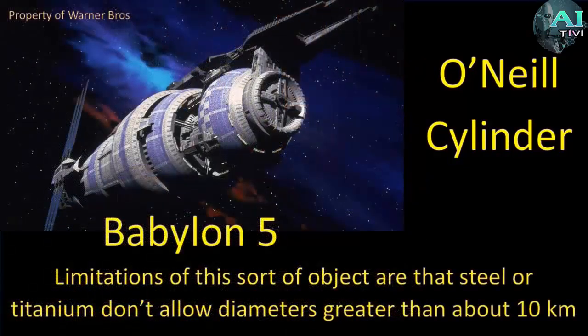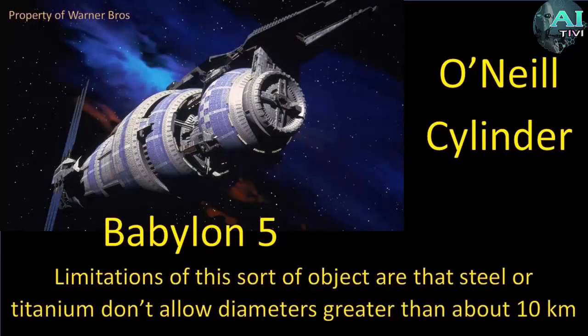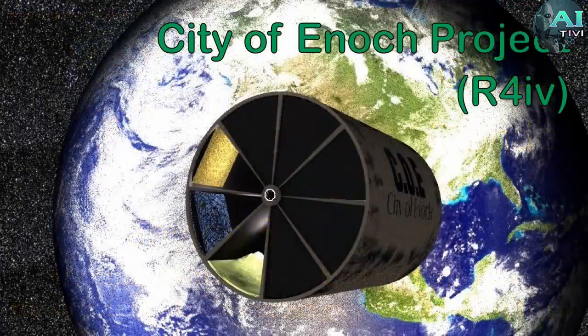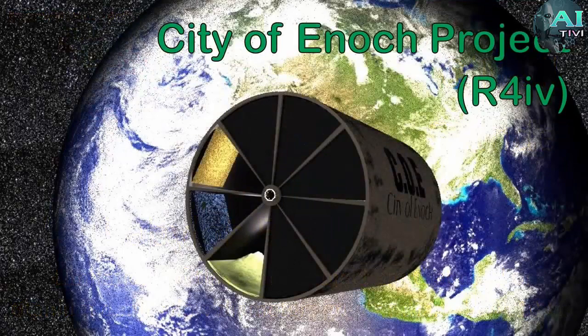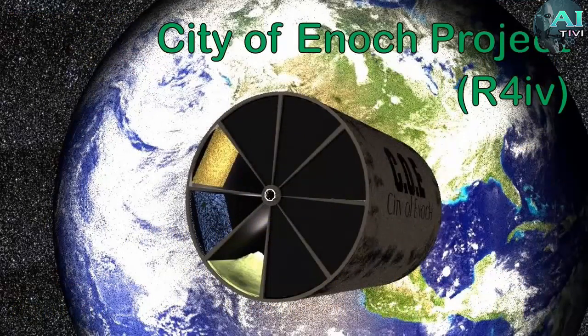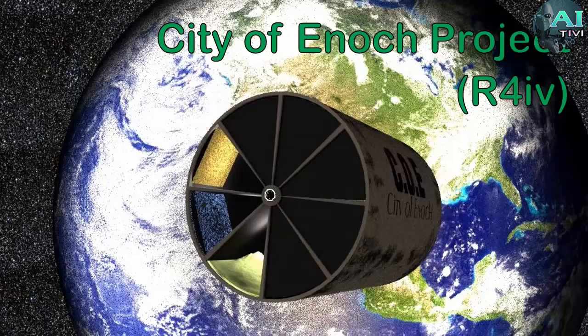One of the examples a lot of people will be familiar with from science fiction is the Babylon 5 space station and TV show. These all work under the assumption you just cannot build a space station more than about 10 kilometers in diameter before it's going to start ripping itself apart from normal metals. Here's another example from the City of Enoch project, you can check out their Facebook page.